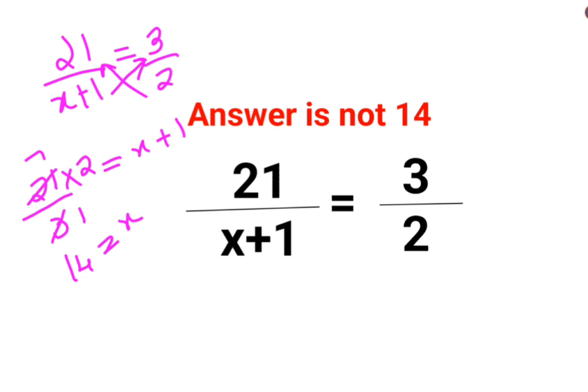But they forgot that they have a plus 1 over here. So the final answer should be subtracting 1 on both sides, so you will say x is equals to 13.